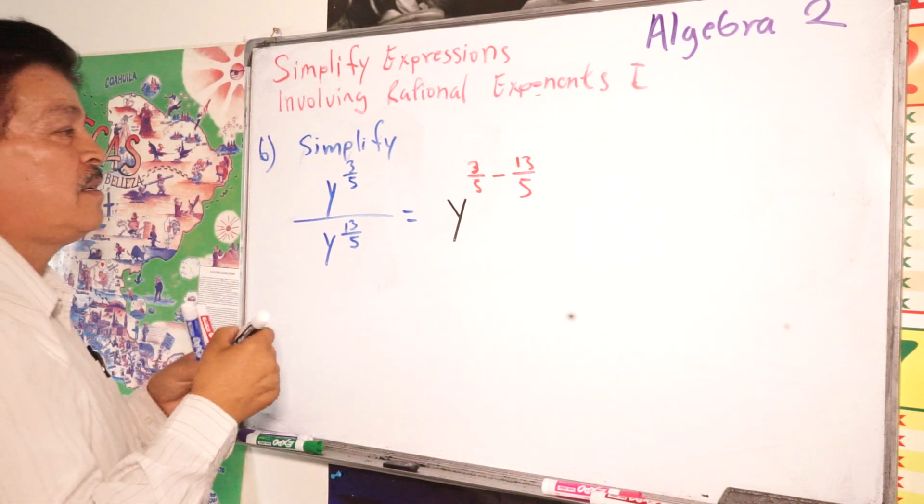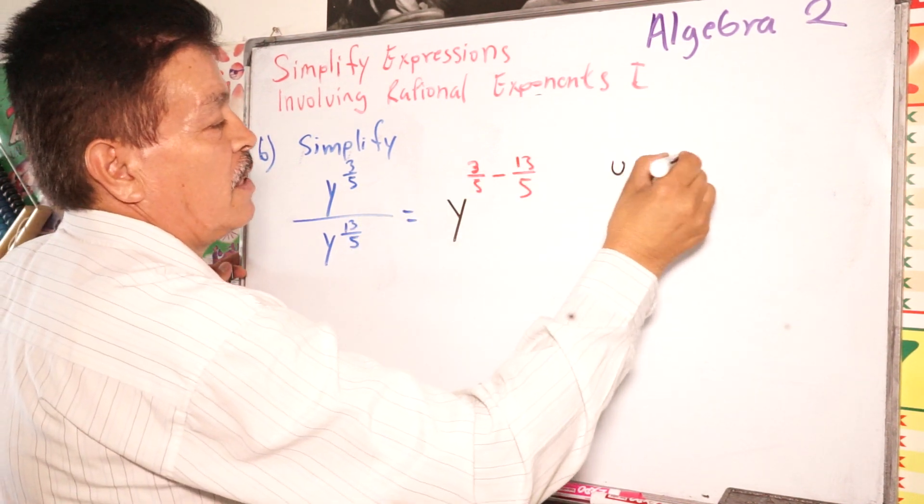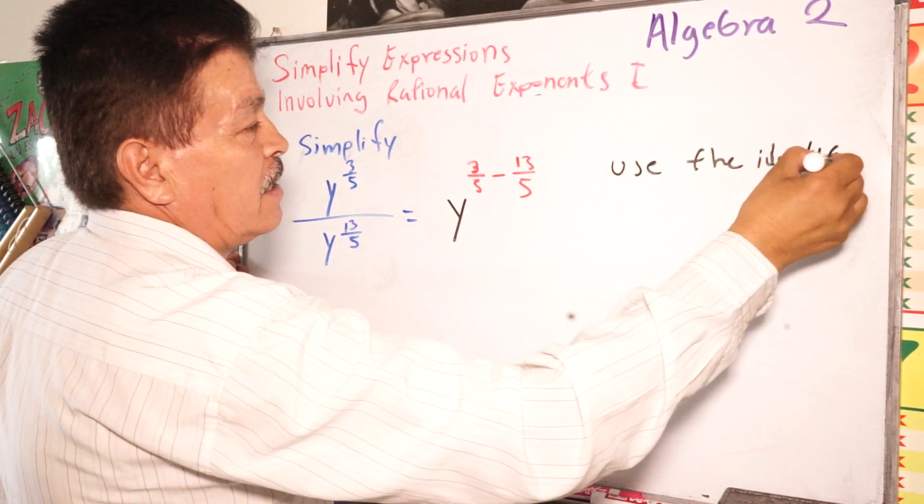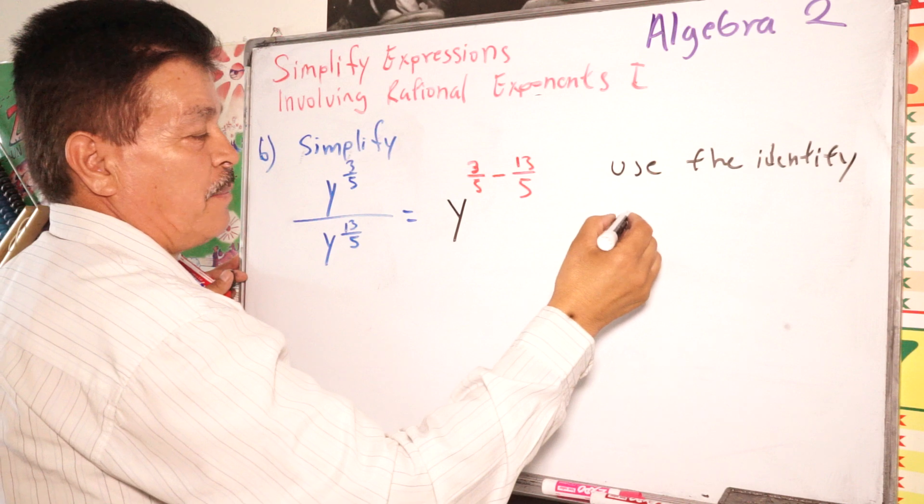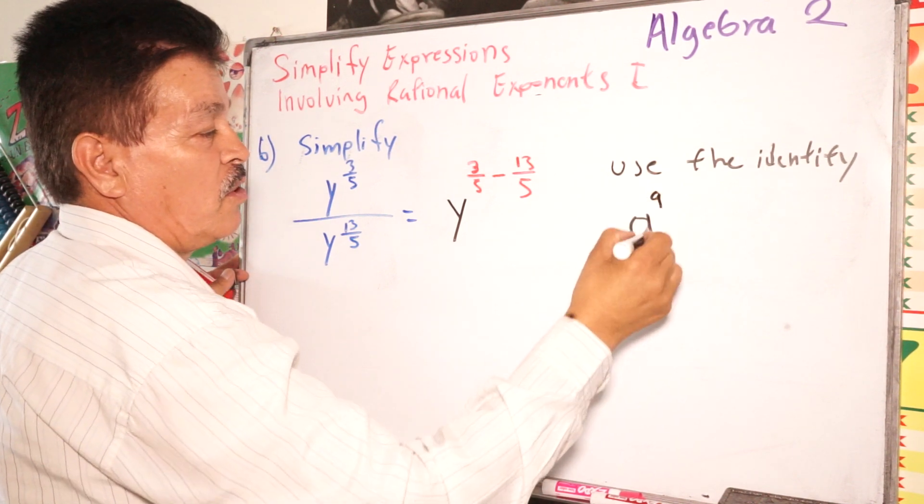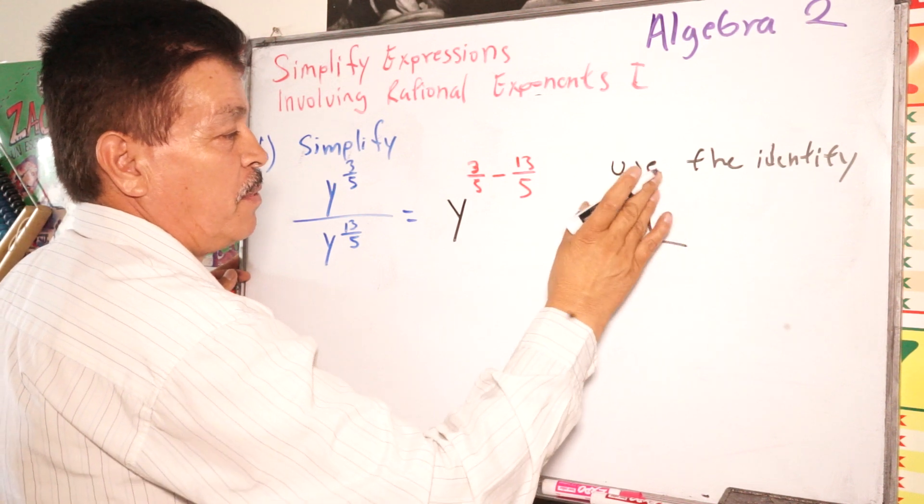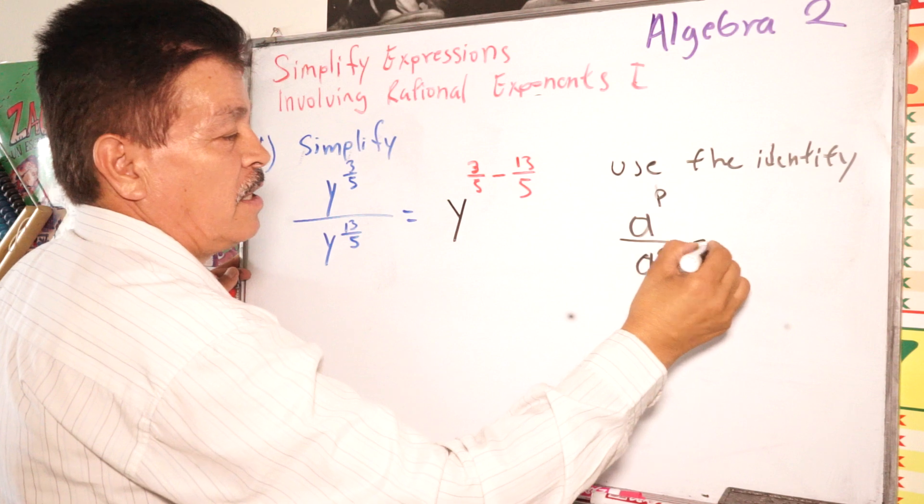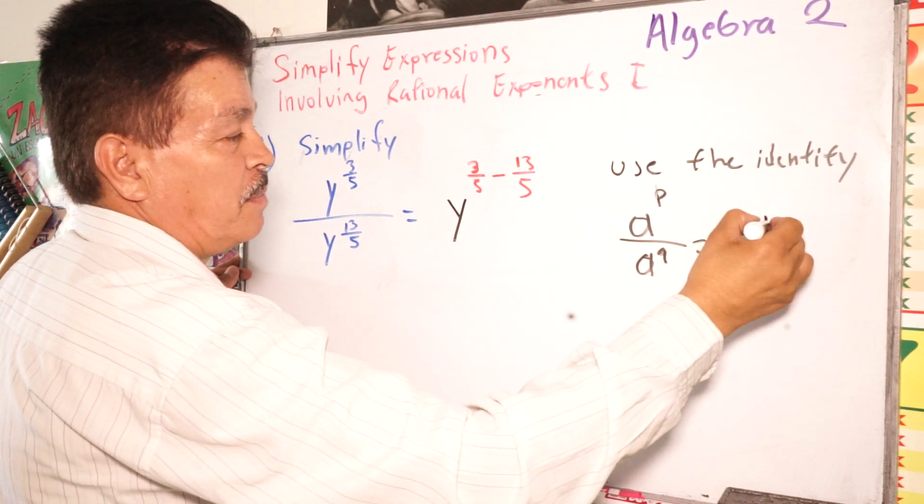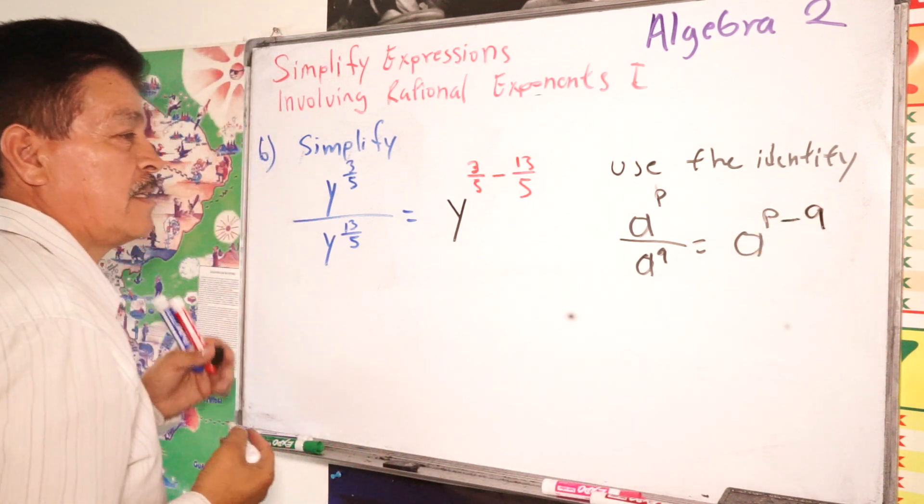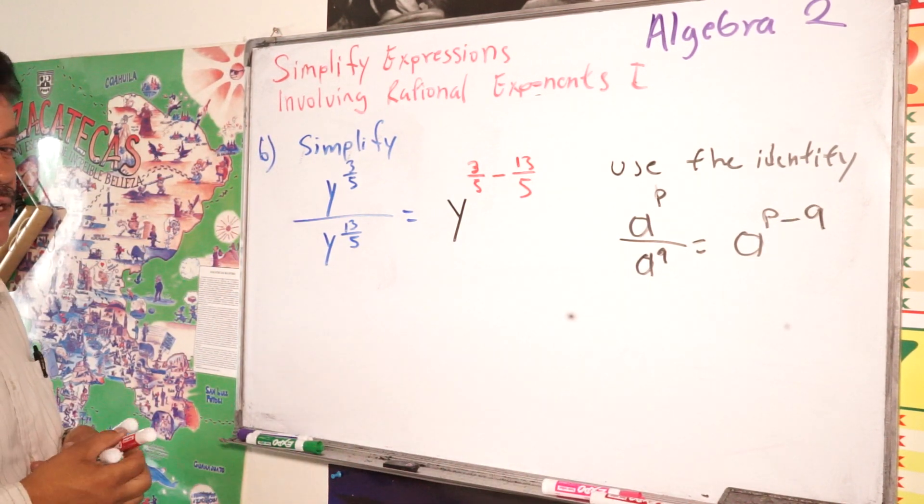So here, let's use the identity. Identity, A to the P power divided by A to the Q power. So it's going to be A to the P power minus Q, right? That's the rule. That's the rule.